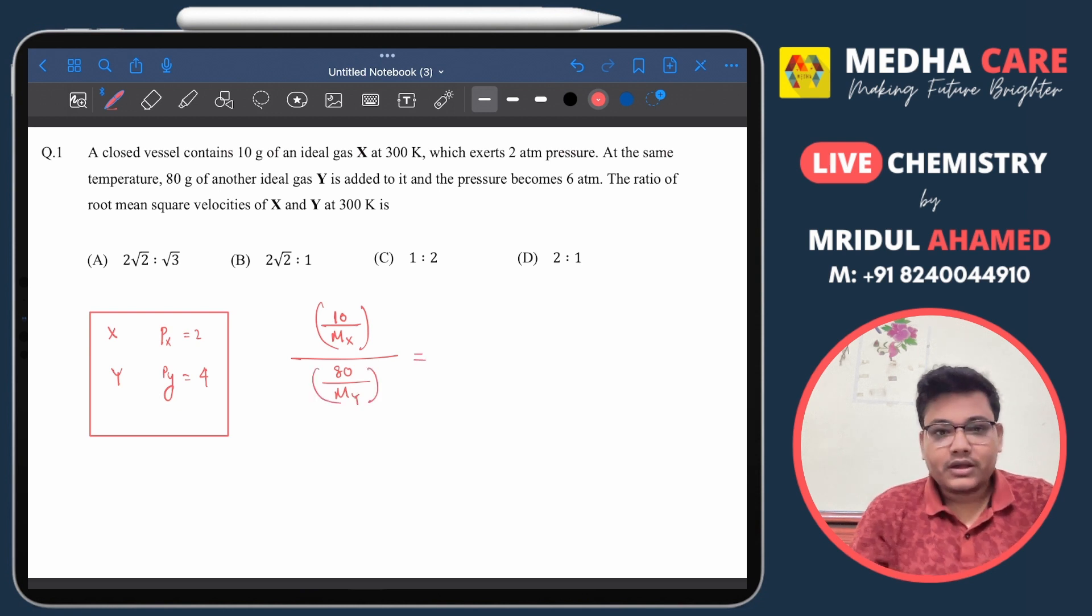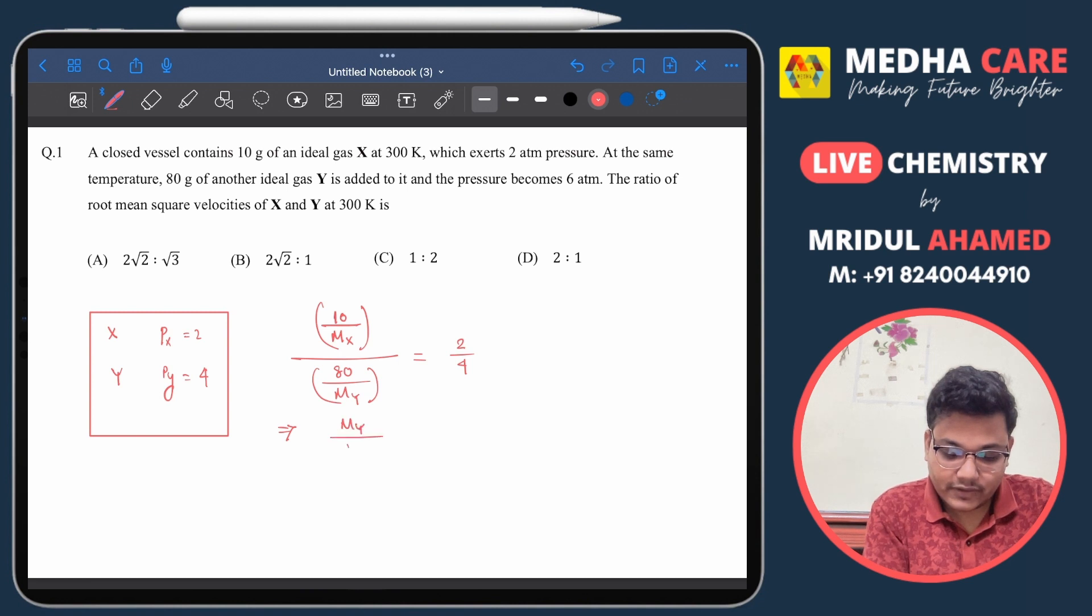The ratio of moles will be equal to the ratio of their partial pressures. So that will be 2 by 4. So if we solve this one, we'll get My divided by Mx, so 2 by 4 into 80 by 10.